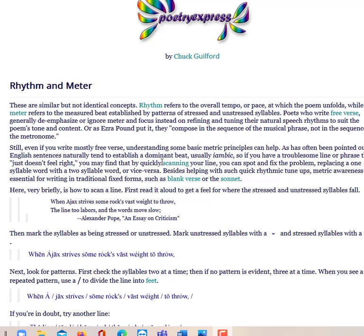you may find that by quickly scanning your line, you can spot and fix the problem, replacing a one-syllable word with a two-syllable word, or vice versa. Besides helping with such quick rhythmic tune-ups, metric awareness is essential for writing in traditional fixed forms, such as blank verse or the sonnet.